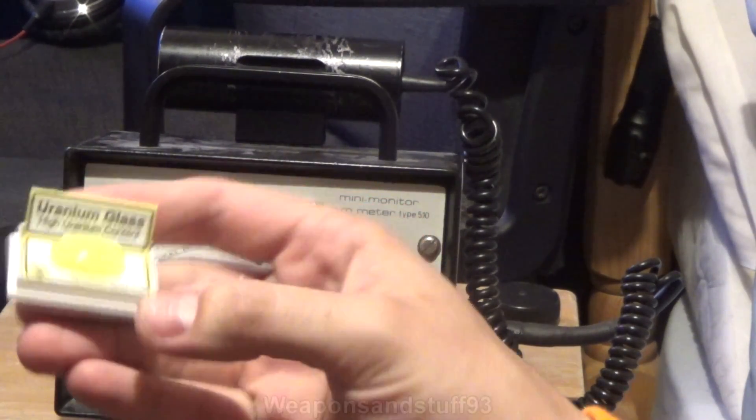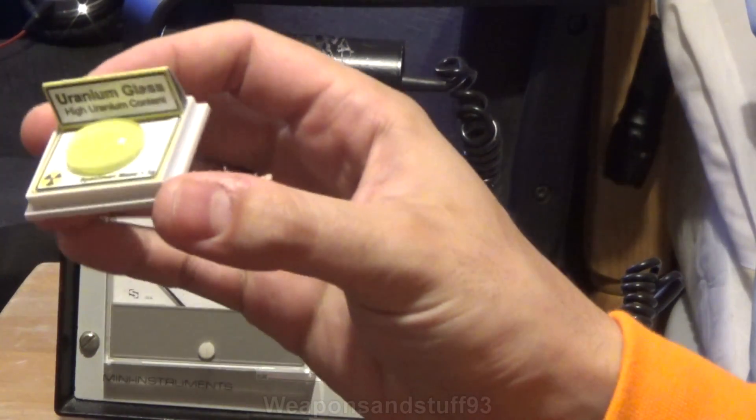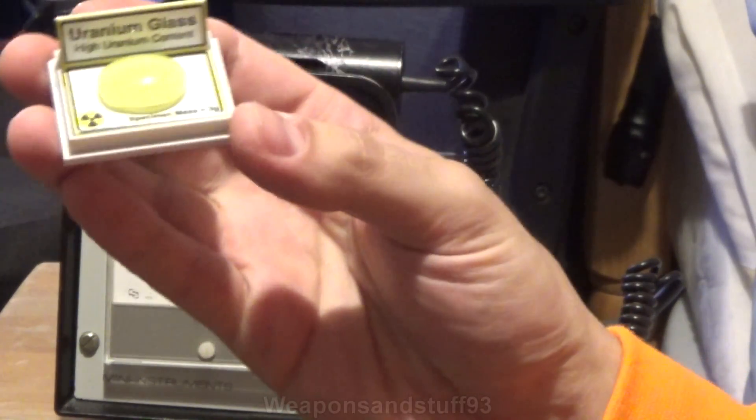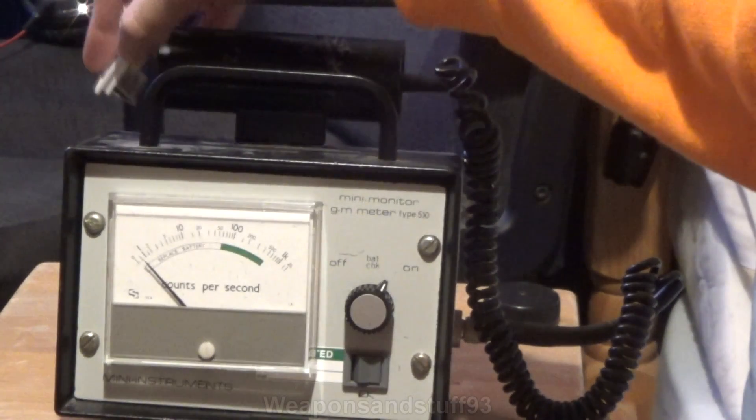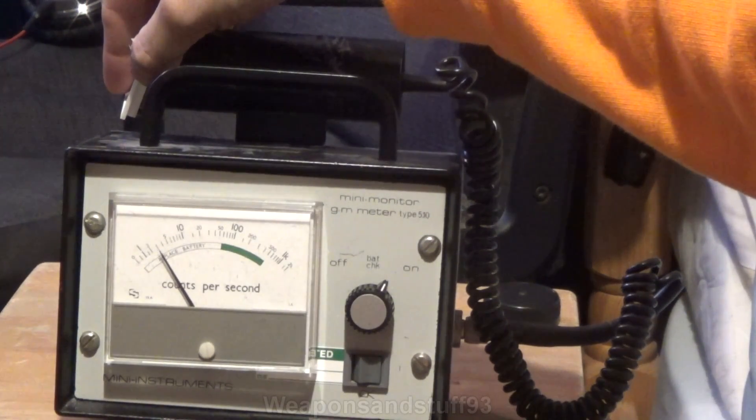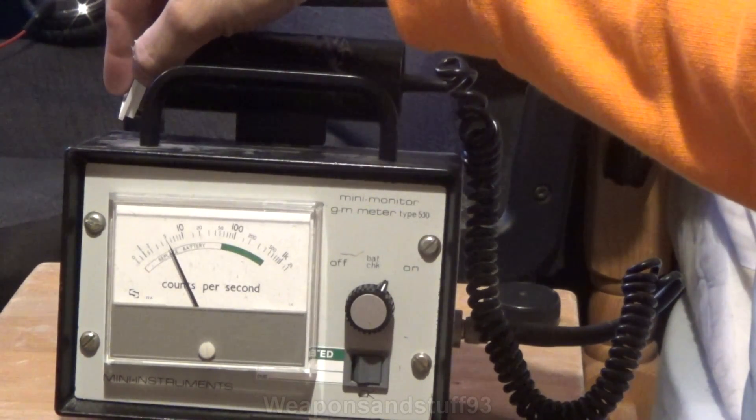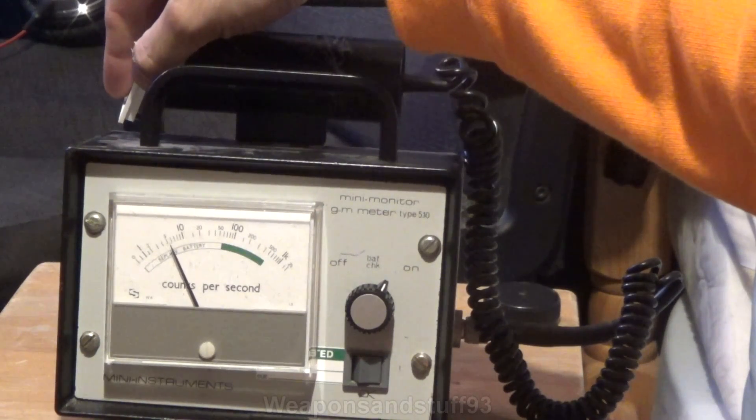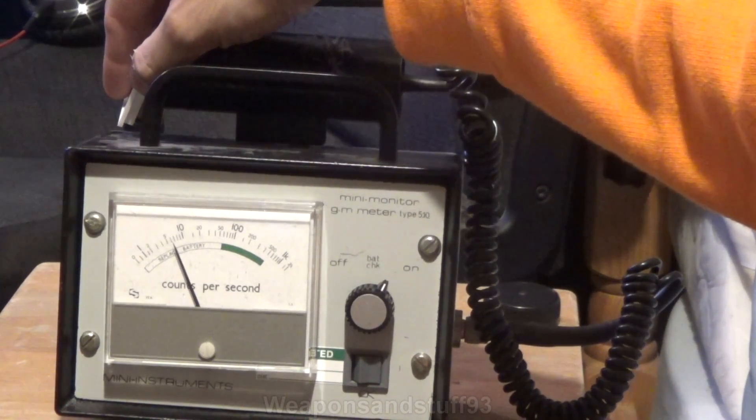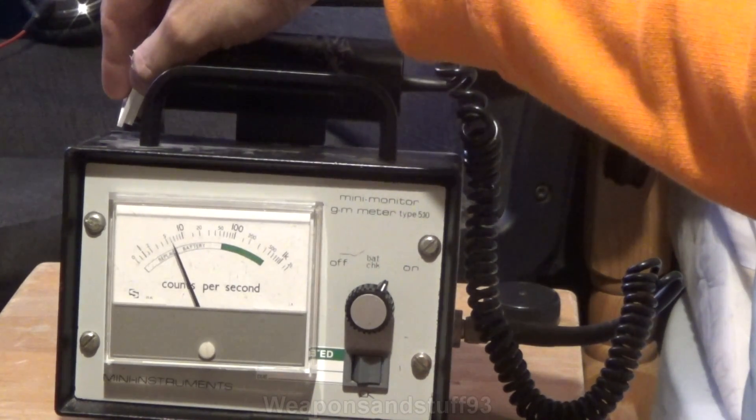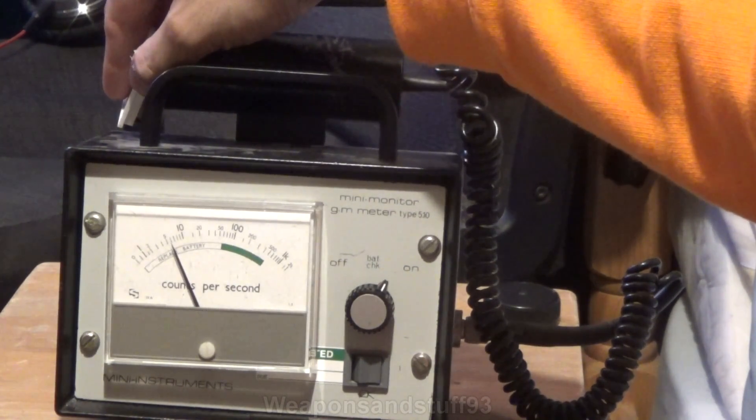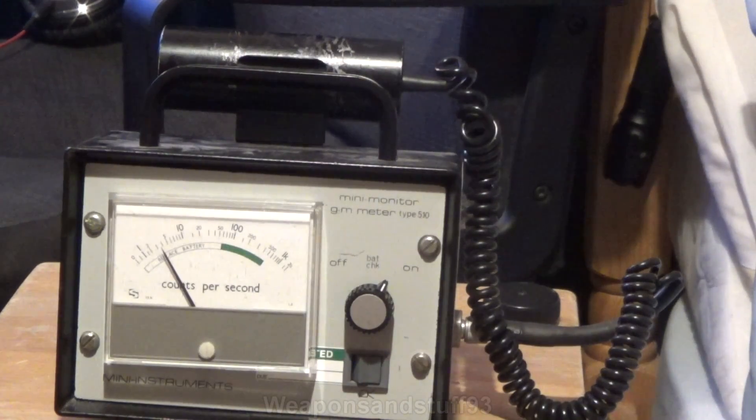So the uranium glass, this is less than three grams of uranium content. As you can see, a fair bit more radioactive than the actual bowl, but that's just because the glass is more concentrated into one area, the uranium glass, rather than it being spread over a wider area. So what's that? Five, six counts per second. Not all that radioactive compared to some things, but still interesting.